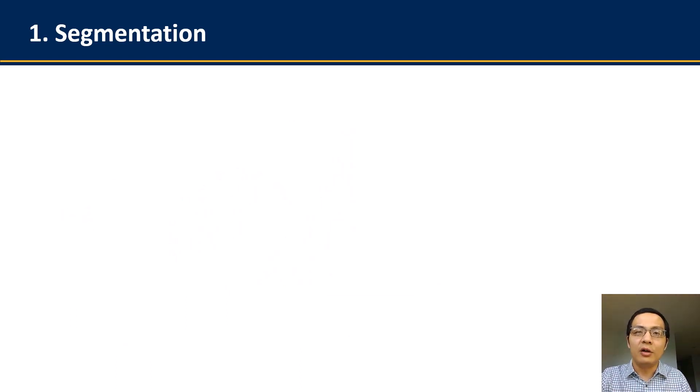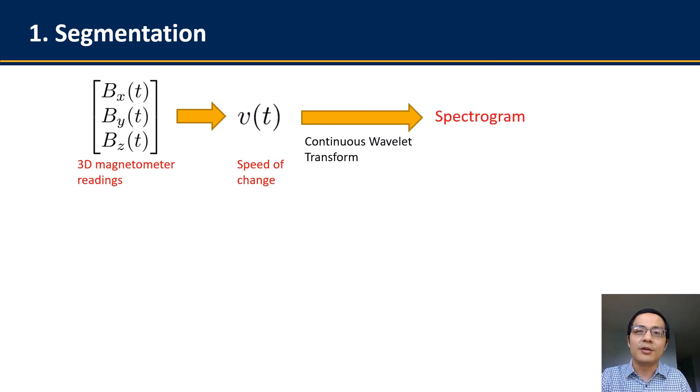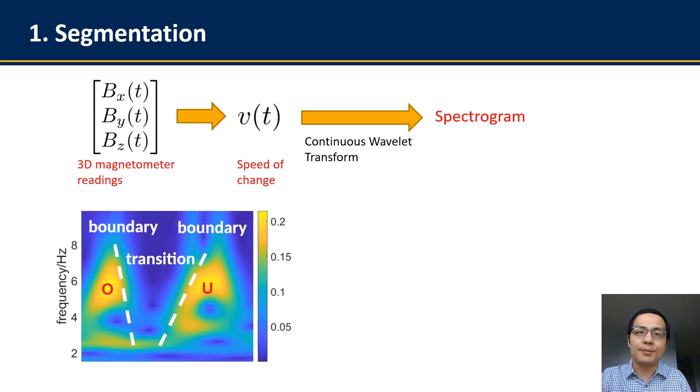So in MagHacker, what we do is that we first convert the raw 3D magnetometer readings into the speed of change of these readings, by doing differentiation over the time series state of these readings. Then, we apply continuous wavelet transform on the speed of change and analyze the produced spectrogram. For example, in this spectrogram corresponding of writing two letters O and U, you can clearly see that there are two distinct highlighted areas indicating the segment with more frequent changes of the writing speed.